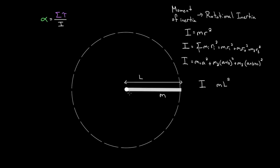ml² would apply if all of the mass were at the full length of the rod as their radius. If you melted this rod into a ball and placed it at the very far end, you'd maximize the rotational inertia. But some of this mass is only at l over two, or l over four, or l over eight, so those pieces have diminished contributions. Turns out for a rod rotating about an axis at its end, the moment of inertia is one-third ml².